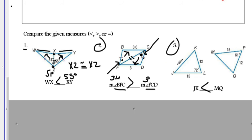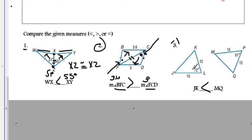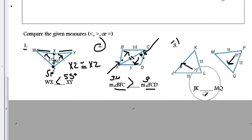For number 3, they didn't need hash marks because 12 is congruent to 12. And JL is congruent to MP. The included angle is 72 and the other is 61. We are comparing side JK, which is opposite the 72, to side MQ, which is opposite the 61. That means JK is greater than MQ, because 72 is greater than 61.